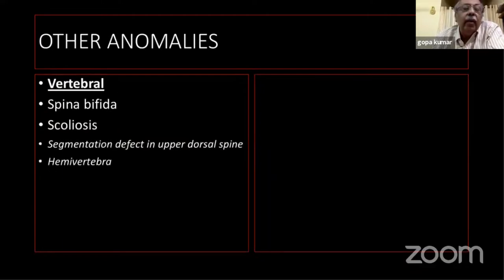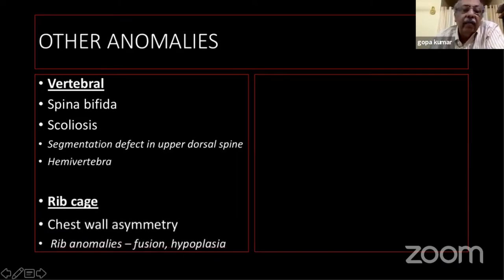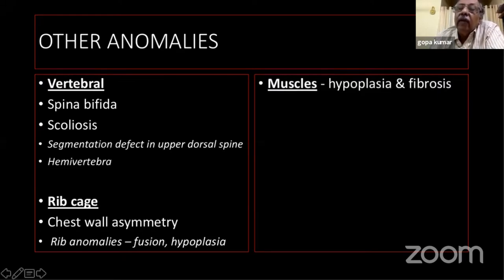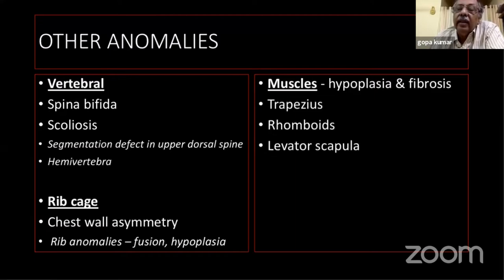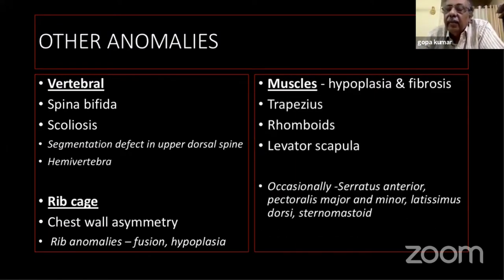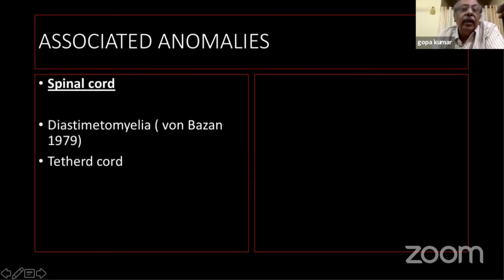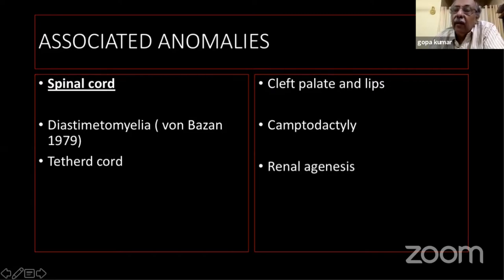Look for other anomalies: vertebral anomalies including spina bifida or scoliosis due to formation or segmentation defects. Look at the rib cage for asymmetry — rib anomalies may only be seen on X-ray. Muscles may be hypoplastic, fibrotic, or absent — commonly trapezius, rhomboids, and levator scapulae, but also serratus anterior and pectoralis major. Associated spinal cord anomalies such as diastematomyelia have been reported, as has tethered cord syndrome. Other associations include cleft palate and lips, camptodactyly, renal agenesis, pulmonary problems, and cardiovascular problems.